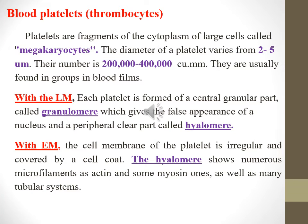Blood platelets, or thrombocytes. Platelets are fragments of the cytoplasm of large cells called megakaryocytes. The diameter of a platelet varies from 2 to 5 micrometers, and their number is about 200,000 to 400,000 per cubic millimeter. They are usually found in groups in a blood film. With light microscope, each platelet is formed of a central granular part called granulomere, which gives the false appearance of a nucleus, and a peripheral clear part called hyalomere.